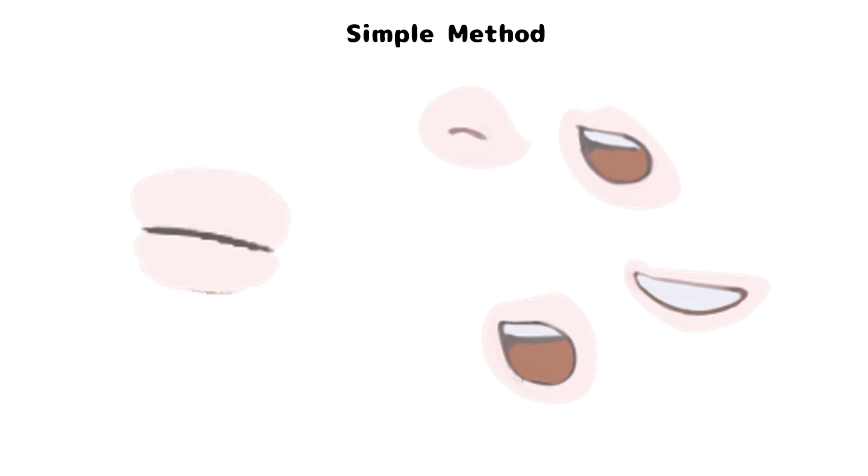Now we're going to move on with the mouth. Similarly to the eyes, I'm going to show you two methods for the mouth. For the simple method, we just have separate mouth layers for the different mouth shapes. And for the standard method, we're going to separate it into the base mouth, the inner parts of the mouth — which is top and bottom teeth and the tongue — and then the top and bottom lip.